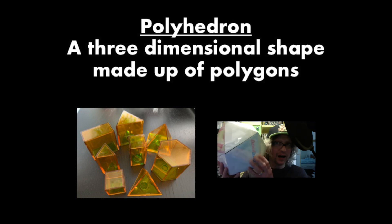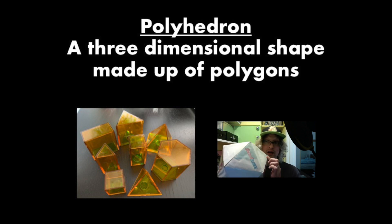So if we look at this big icosahedron right here, this is something a student made last year. It is a three dimensional object and it's made up of, in this case, equilateral triangles. It's made up of polygons.